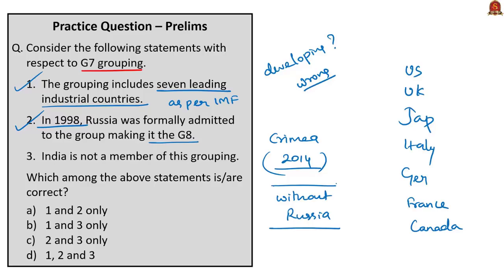The third statement: India is not a member of this grouping — correct. India will be admitted once it becomes a leading industrial country, but at present India is not a member. All three statements are correct, so the correct answer is option D: one, two, and three.